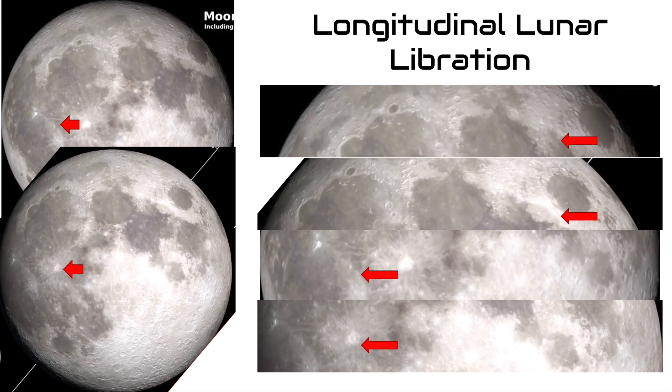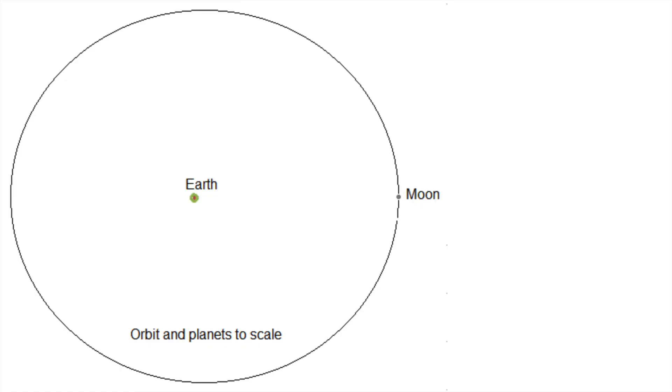First is longitudinal lunar libration. Longitudinal libration is the slight rotation of the moon sideways. Why does this happen though? It is because of the moon's elongated orbit. The moon's orbit isn't a perfect circle. It is an off-centered oval called an ellipse.